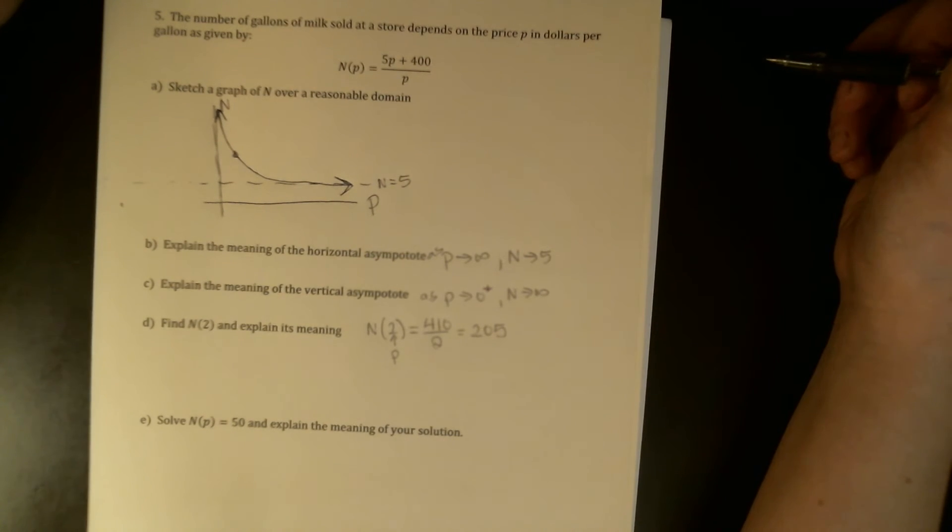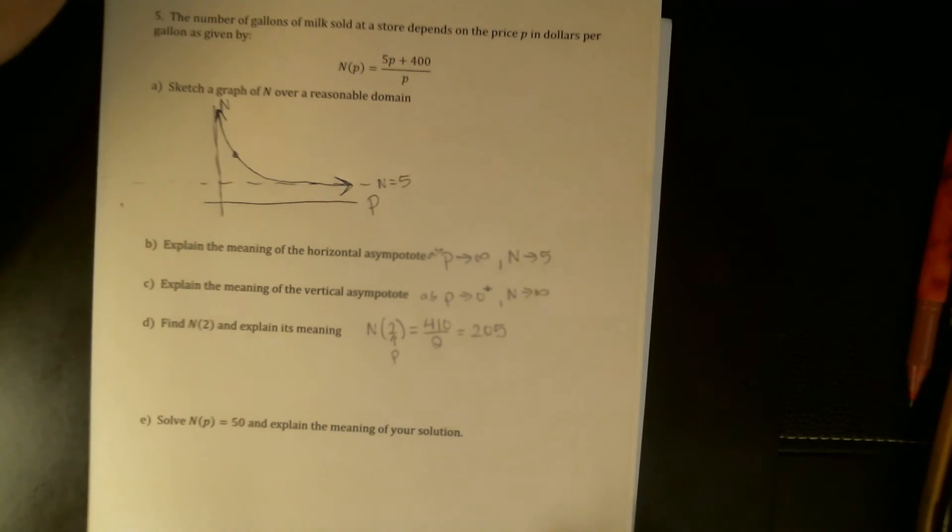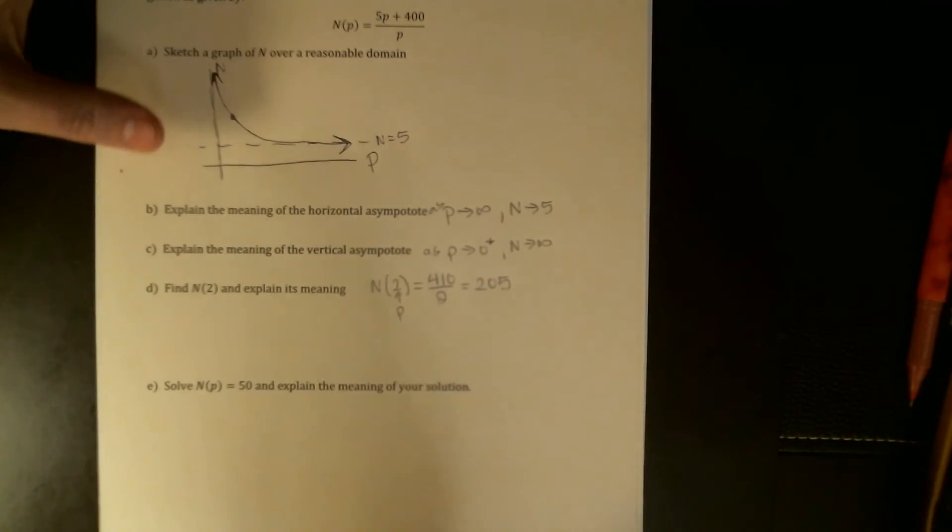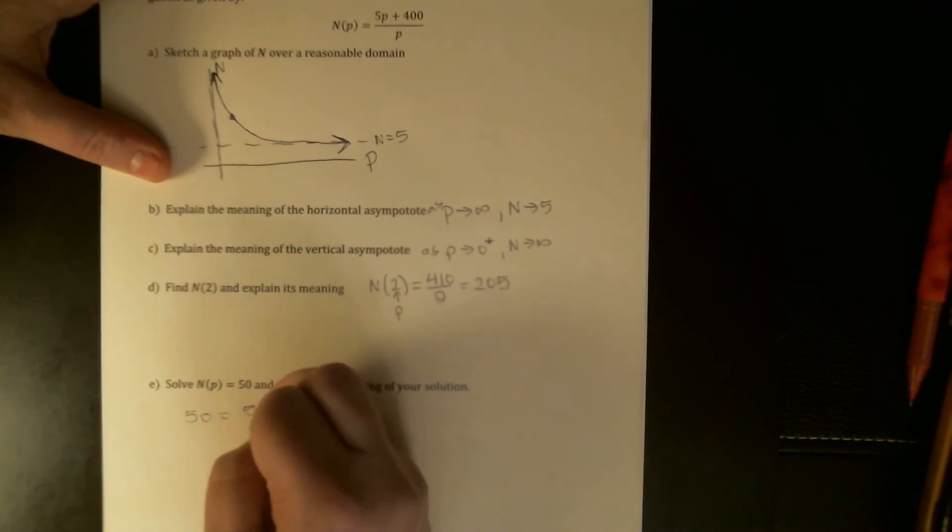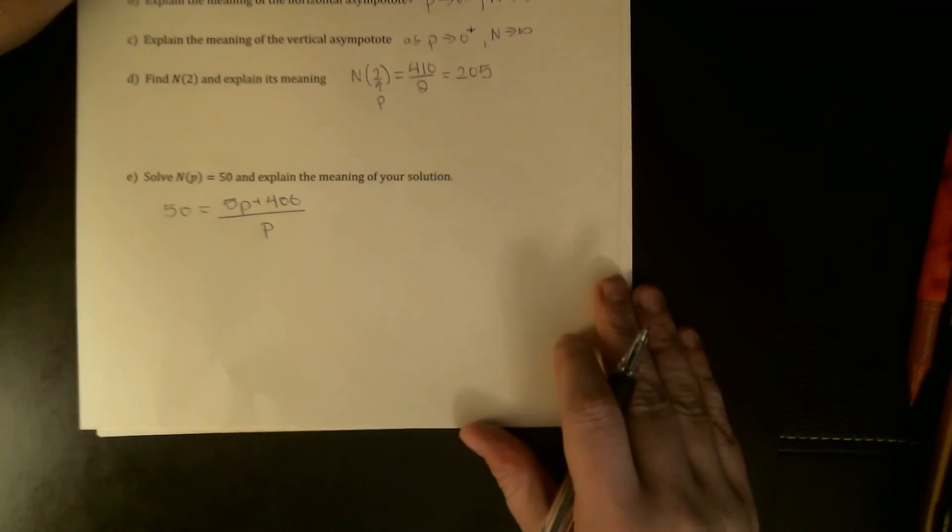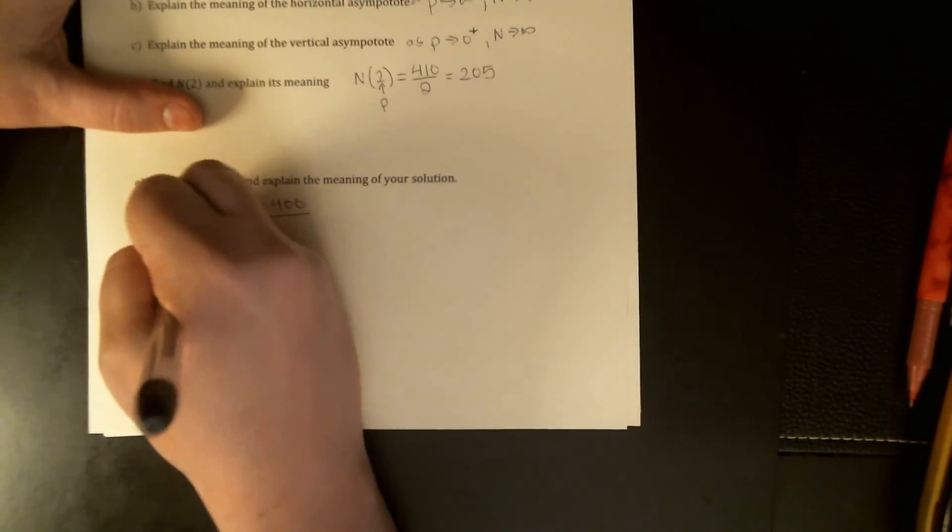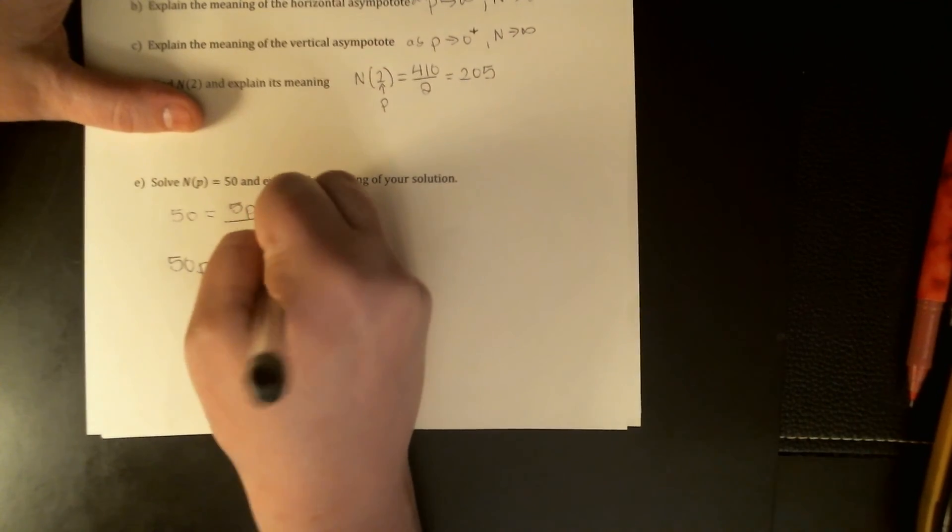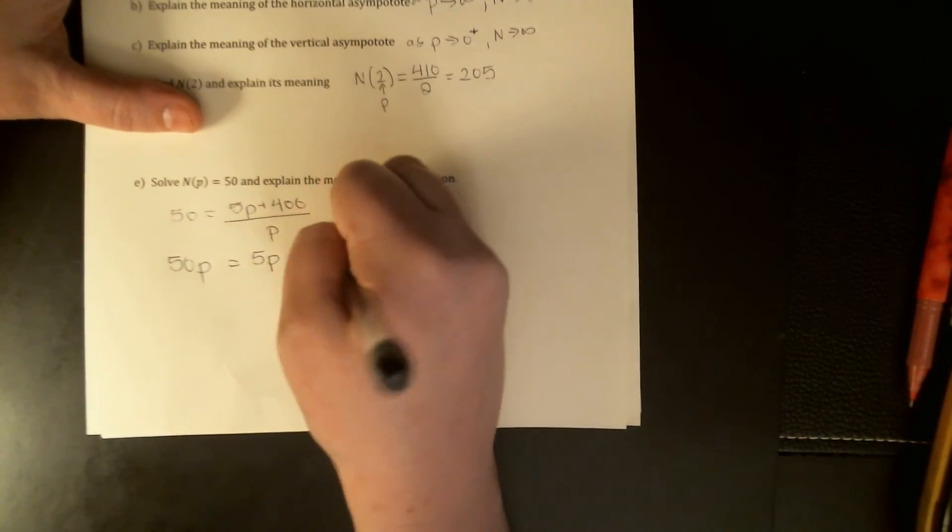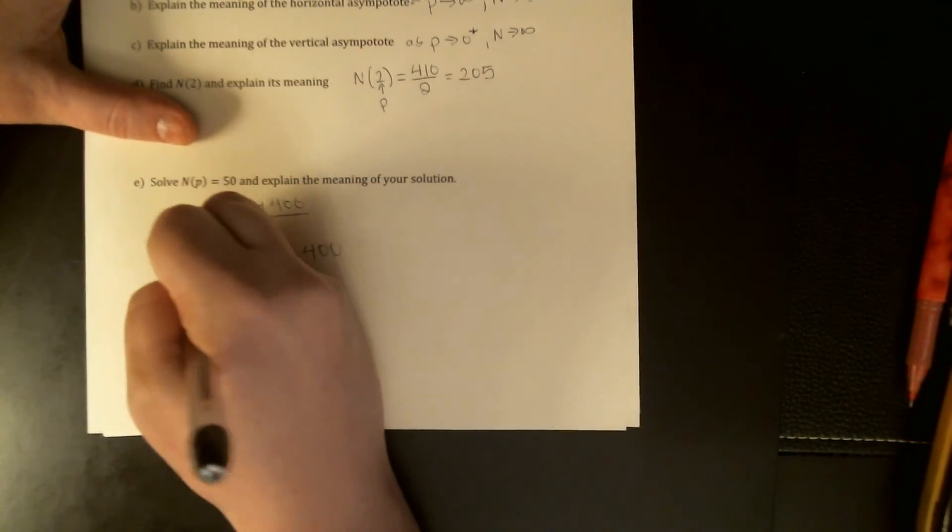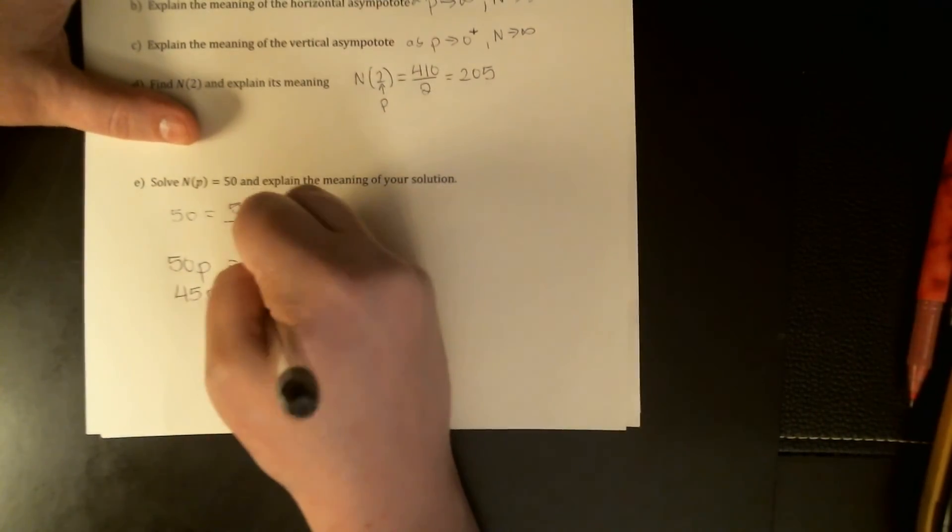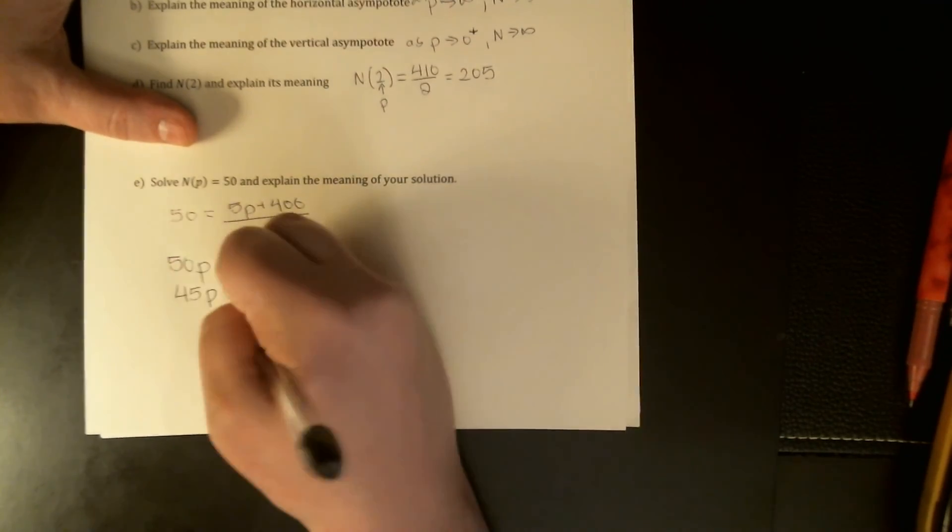Last one, solve n of p equals 50 and explain the meaning of your solution. These last couple are just a little bit of function notation review mixed in. We're going to replace the n of p with 50, which leaves us with a rational equation. The first thing we should be doing is clearing the fraction. I'm going to multiply both sides by p. I get 50p equal to 5p plus 400. I should then subtract the 5p, which will leave me with 45p equals 400. And then I should divide by 45.